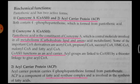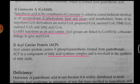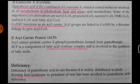Coenzyme A functions as an acyl carrier. Acyl groups are linked to coenzyme A by a thioester linkage to give acyl-CoA. Whenever an acyl group is involved, coenzyme A is very vital in this function. The second active form is acyl carrier protein, ACP. The acyl carrier protein carries 4-phosphopantothenate formed from pantothenate. ACP is a component of the fatty acid synthesis complex and is involved in the synthesis of fatty acids, making it very important in fatty acid synthesis metabolism.